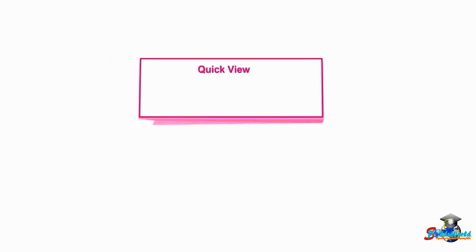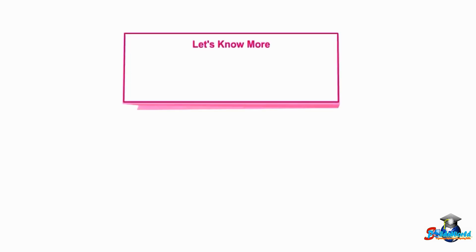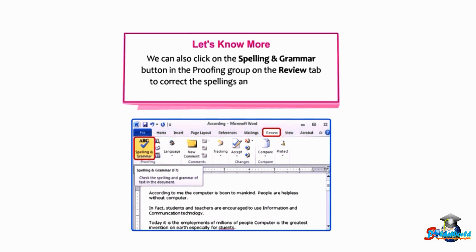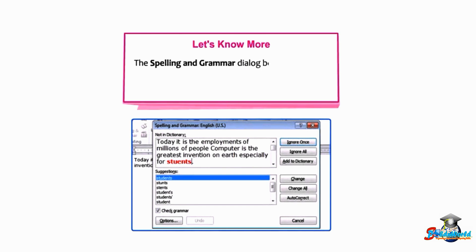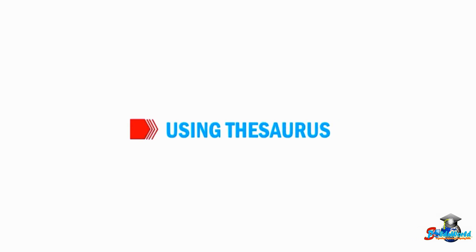Students, note that the shortcut key to check spellings and grammar is the F7 key. We can also click on the Spelling and Grammar button in the Proofing group on the Review tab to correct spellings and grammar in the document. The Spelling and Grammar dialog box appears with the wrong spelling highlighted in red, along with a list of suggestions.